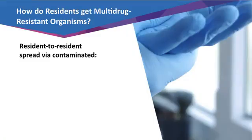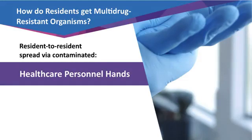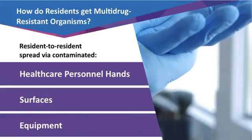Residents get multidrug-resistant organisms from multiple sources. The main way these MDROs are spread is by the hands of healthcare personnel. The hands of healthcare personnel can spread MDROs by touching one infected resident and then touching another resident without washing their hands. It can also occur by indirect contact when a healthcare provider touches a contaminated surface or piece of equipment and then touches a resident without washing their hands. Similarly, residents can spread MDROs to each other in the same way if they fail to wash their hands after becoming contaminated.